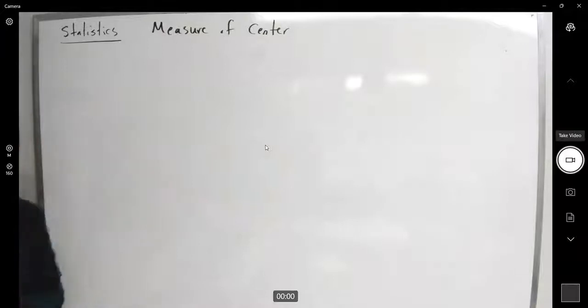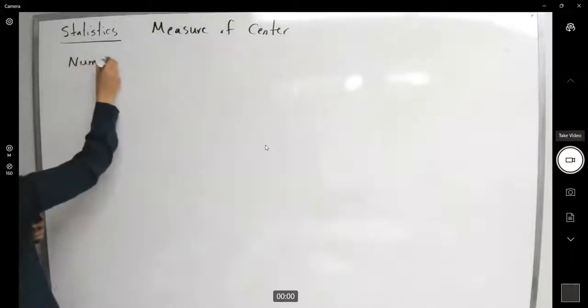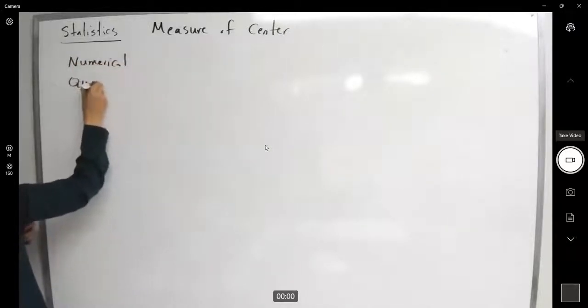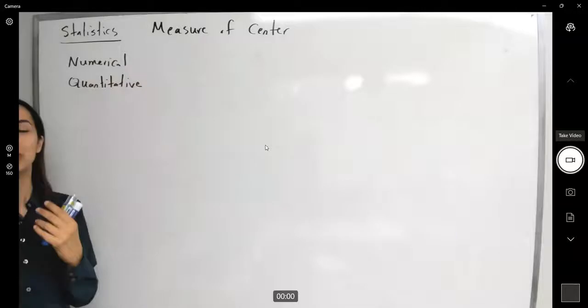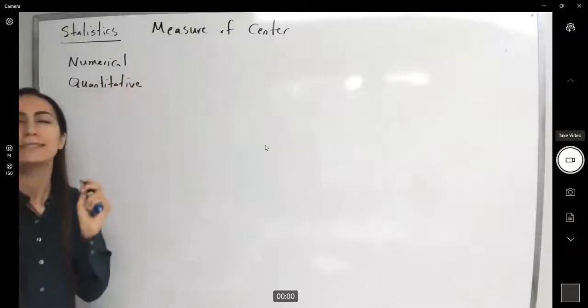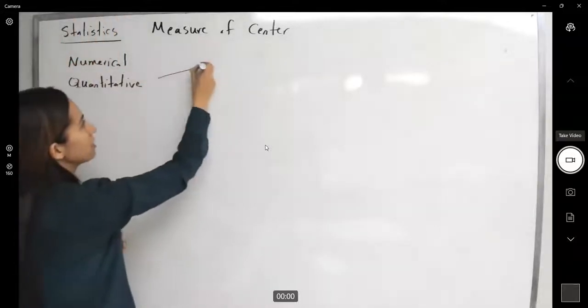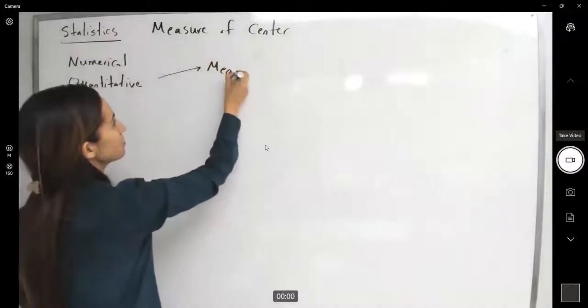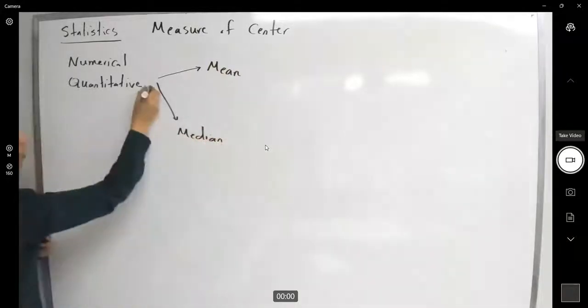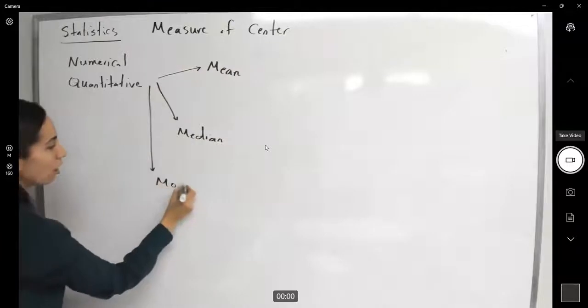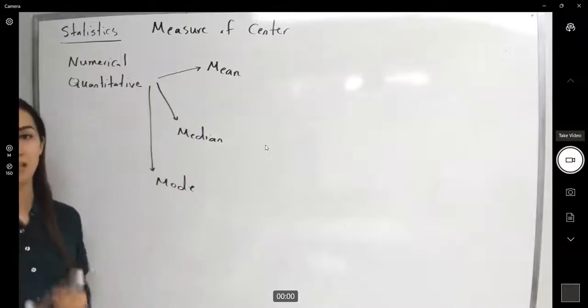When it comes to statistics, when you are working with numerical or quantitative data, you can use different methods finding the center of the data. You can either find the mean or you can find the median or you can find the mode of the data. Each one of these represents the center of the data.